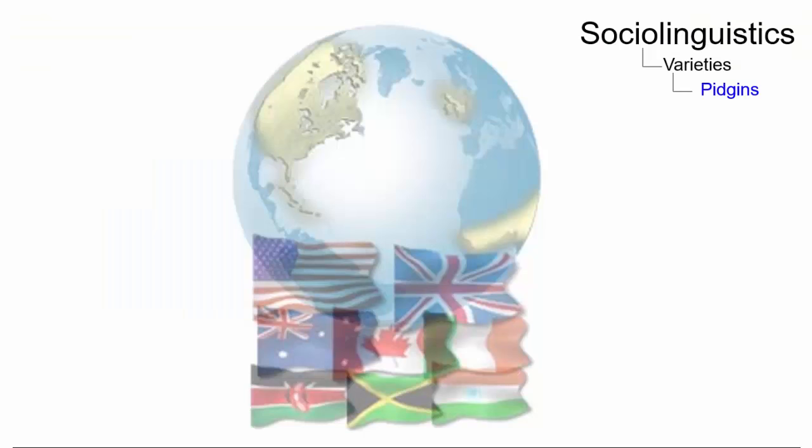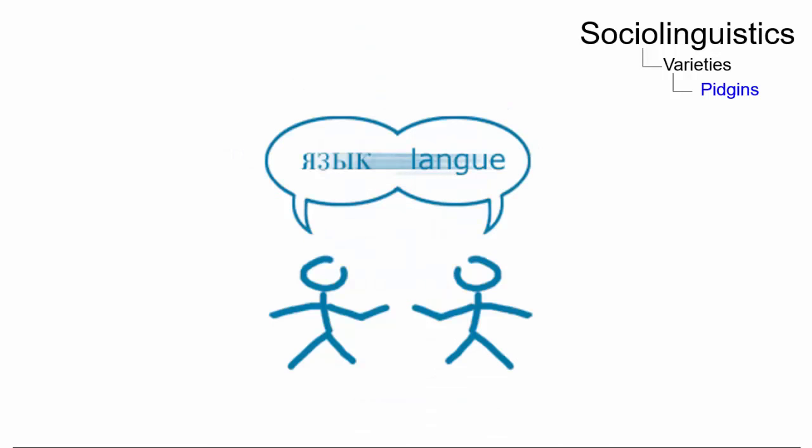A pidgin is a grammatically simplified means of communication that develops when speakers from different language communities come in contact and must interact.